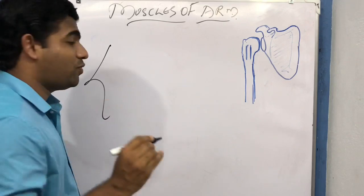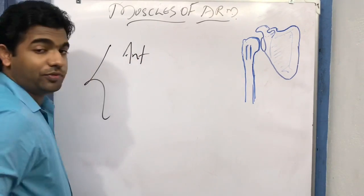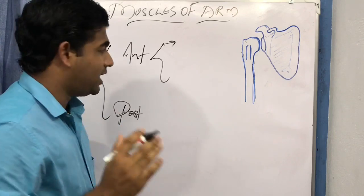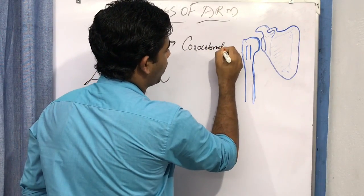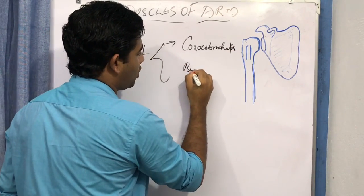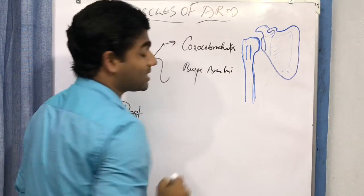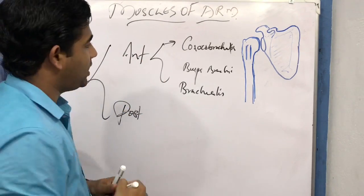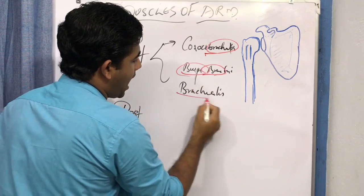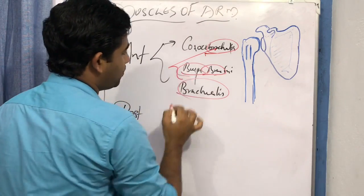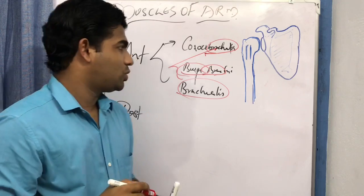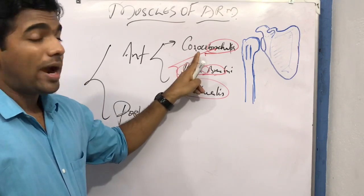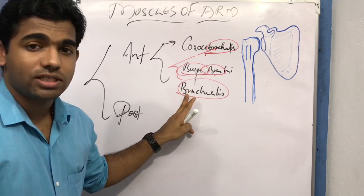The muscles of the anterior compartment are the coracobrachialis, the biceps brachii, and the brachialis. If you feel you might forget these names, note that brachialis, biceps brachii, and brachialis are quite related terms. 'Brachium' or 'brachias' is related to the arm in Greek, so all three muscles have 'brachialis' or 'brachia' endings, making them easy to remember.